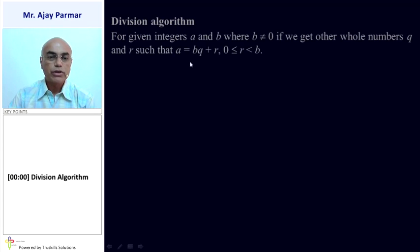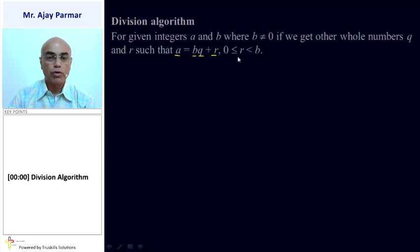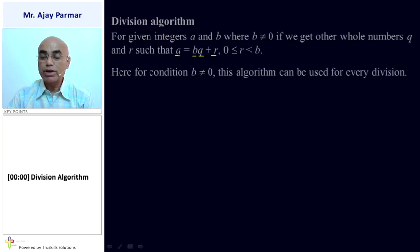In general sense, we will call A the dividend, B the divisor, Q the quotient, and R the remainder. The value of the remainder is always going to be either zero or one less than that of the divisor. The condition is B is not zero, which means this algorithm can be used for every division.